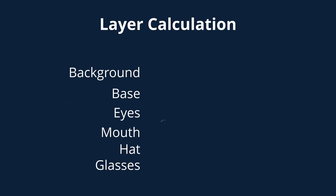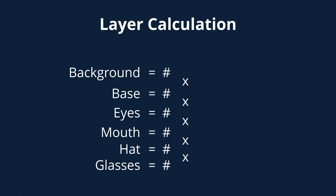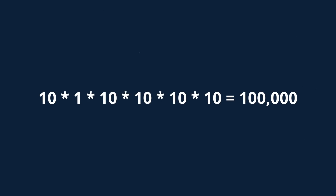Let's say that we have six layers: background, base, eyes, mouth, hat, and glasses. The calculation to figure out how many variations will result is the number of variations in a layer times the number of variations in the next layer, and so on. So if we had 10 background variations, one base which will be the same every time, 10 eye variations, 10 mouth, 10 hats, and 10 glasses, then this calculation would be 10 times 1 times 10 times 10 times 10 times 10, and that would equal 100,000. It's a little more than we need, but that's how you calculate it.